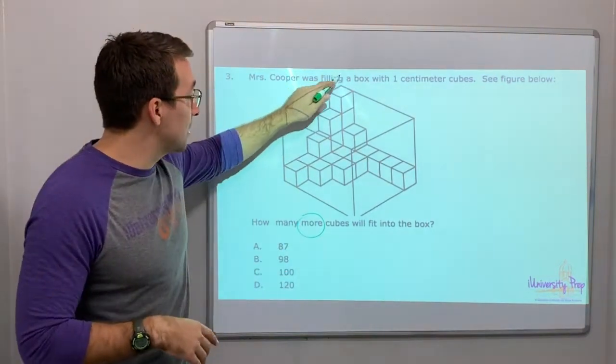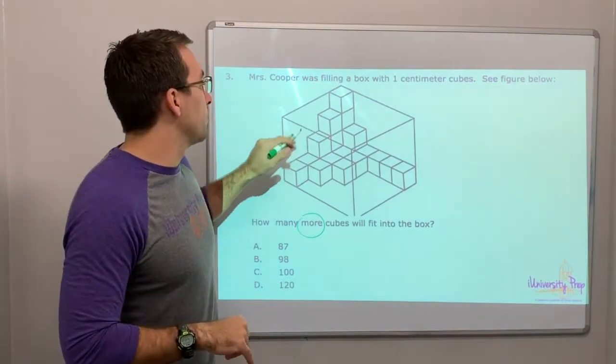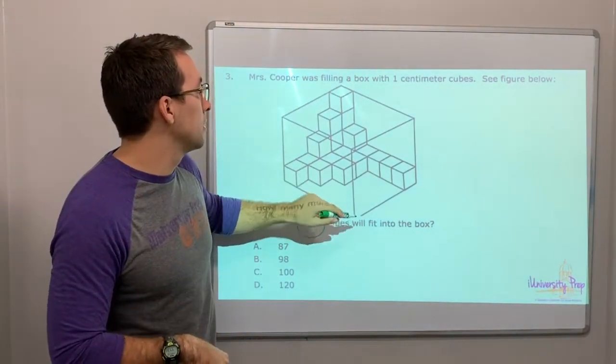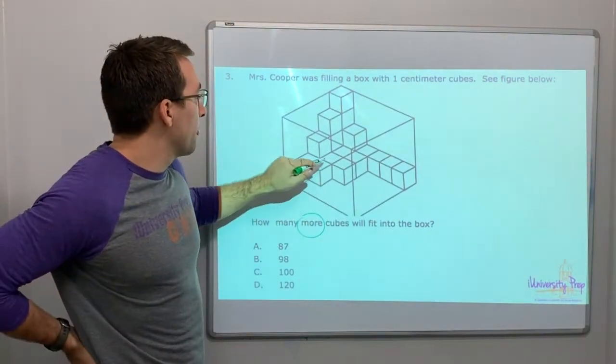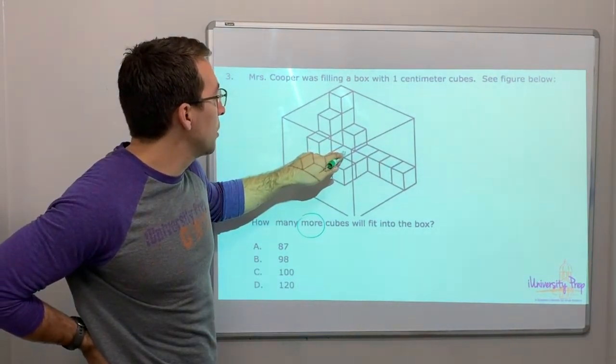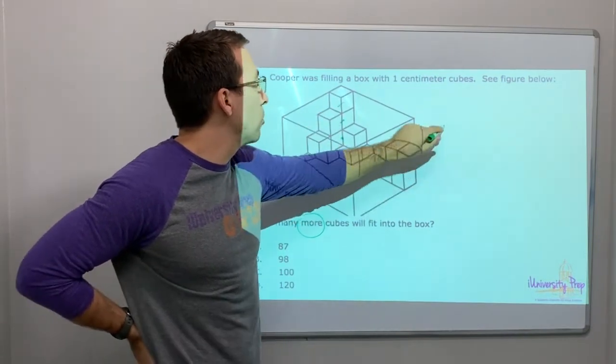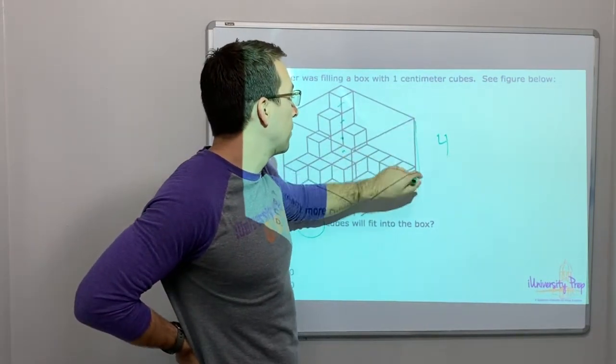So let's find the, and this looks kind of weird on the projector, I know. Let's count how many tall it is. So this base layer, and there's one cube behind it, so we'll go one, two, three, four. It's four tall. Right? Four tall.